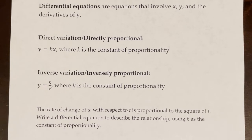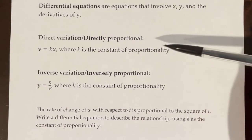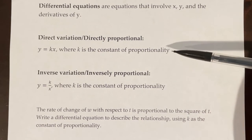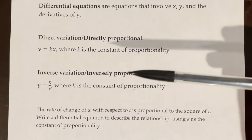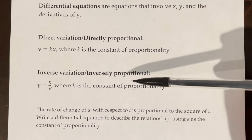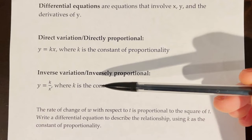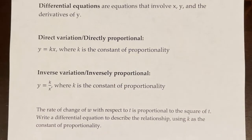If x and y have direct variation, or if x and y are directly proportional, we can say that y is equal to k times x, where k is the constant of proportionality. If x and y have inverse variation, or if x and y are inversely proportional, we can say that y is equal to k over x, where k is the constant of proportionality.